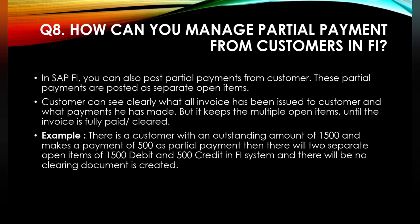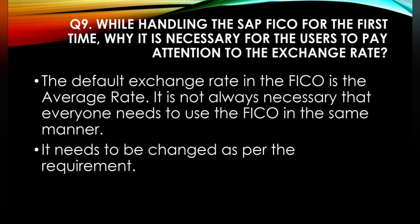The next question is: how can you manage posting partial payments from customers in SAP FI? In SAP FI, you can post partial payments for customers. These partial payments are posted as separate open items. The customer can see clearly what invoices have been issued and what payments have been made, but it keeps multiple open items until the invoice is fully paid and cleared. For example, if a customer has an outstanding amount of 1500 and makes a payment of 500, there will be two separate open items of 1500 debit and 500 credit in the FI system, and no clearing document is created.